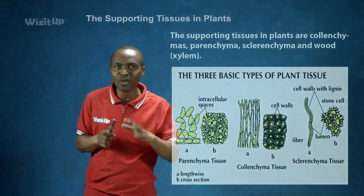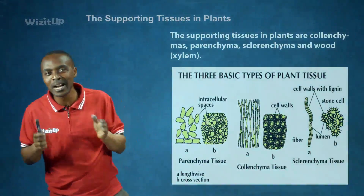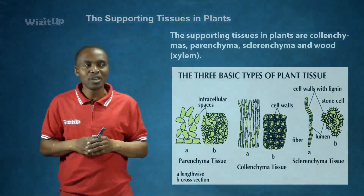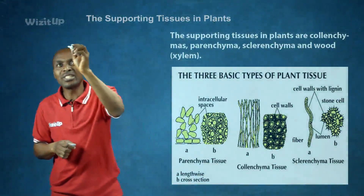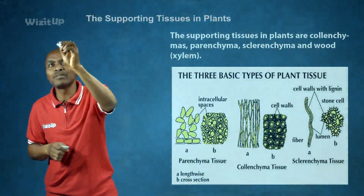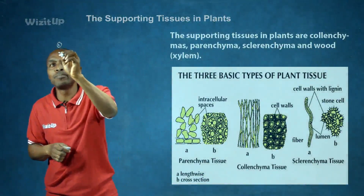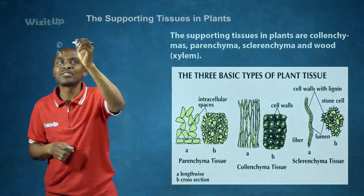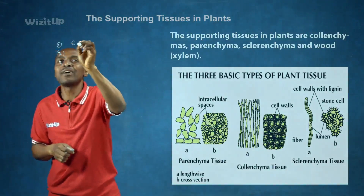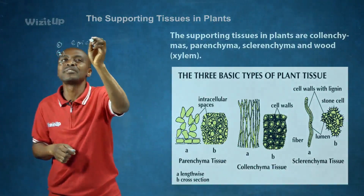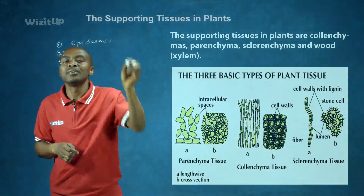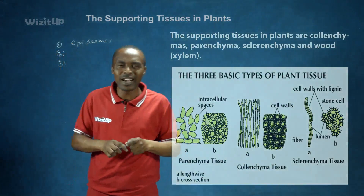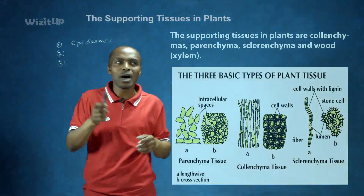Before then, we need to look at the breakdown of the stem and the roots. We said that the plant is made up of several parts. First, we have the epidermis, because it wouldn't be advisable to talk about supporting tissues without first understanding the plant structure.